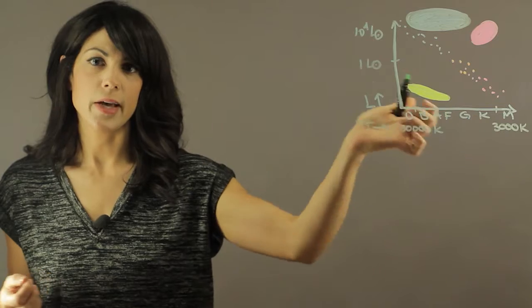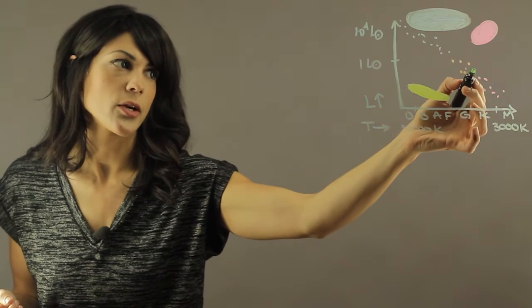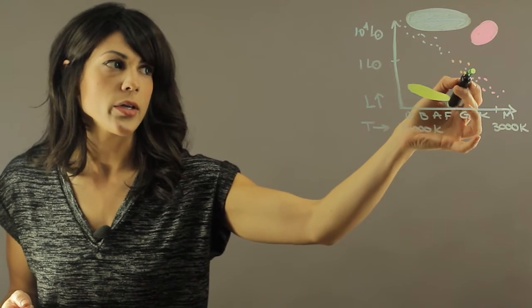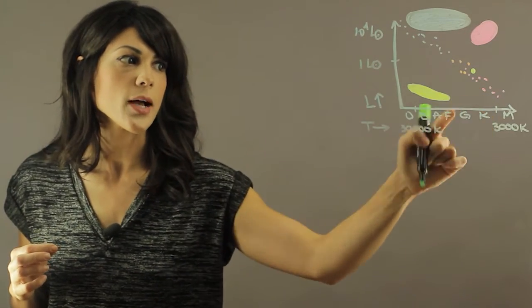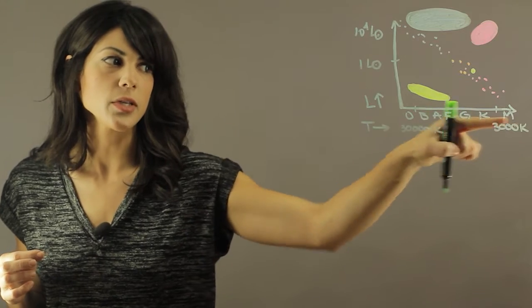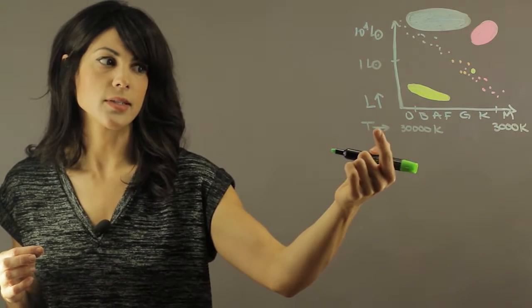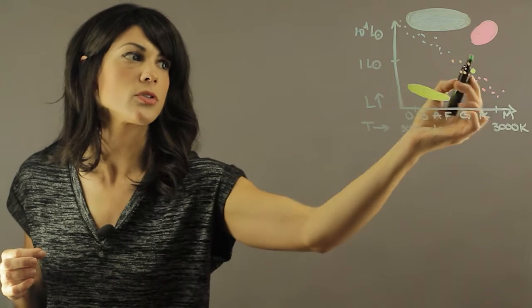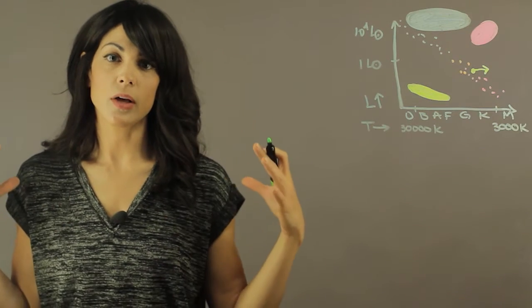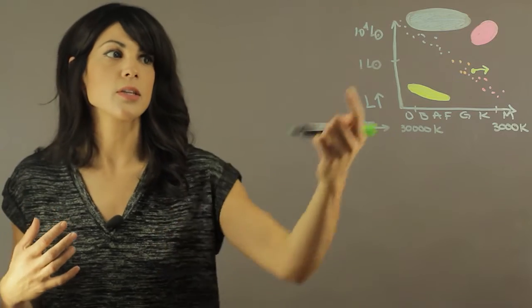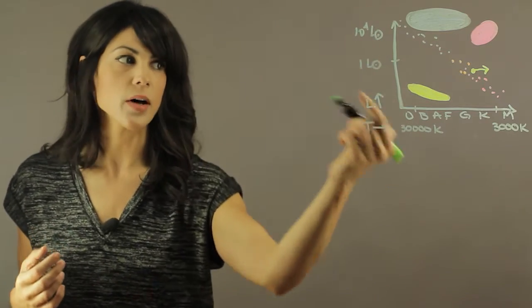So if we look at our HR diagram, a star like our Sun is going to become a red giant. It's going to puff out the outer layers and become cooler. As it becomes cooler it moves down the HR diagram since the temperature drops in this direction, but because it's so large it becomes very luminous, therefore on the luminosity axis it moves up.